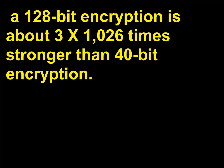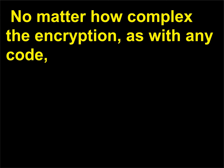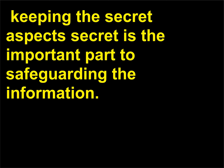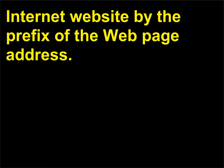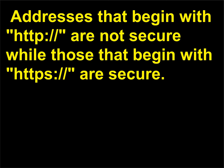The strength of the system depends on the size of the key. A 128-bit encryption is about 3×10²⁶ times stronger than 40-bit encryption. No matter how complex the encryption, as with any code, keeping the secret aspects secret is the important part to safeguarding the information. Users can easily tell whether they are on a secure or non-secure internet website by the prefix of the web page address. Addresses that begin with HTTP:// are not secure, while those that begin with HTTPS:// are secure.